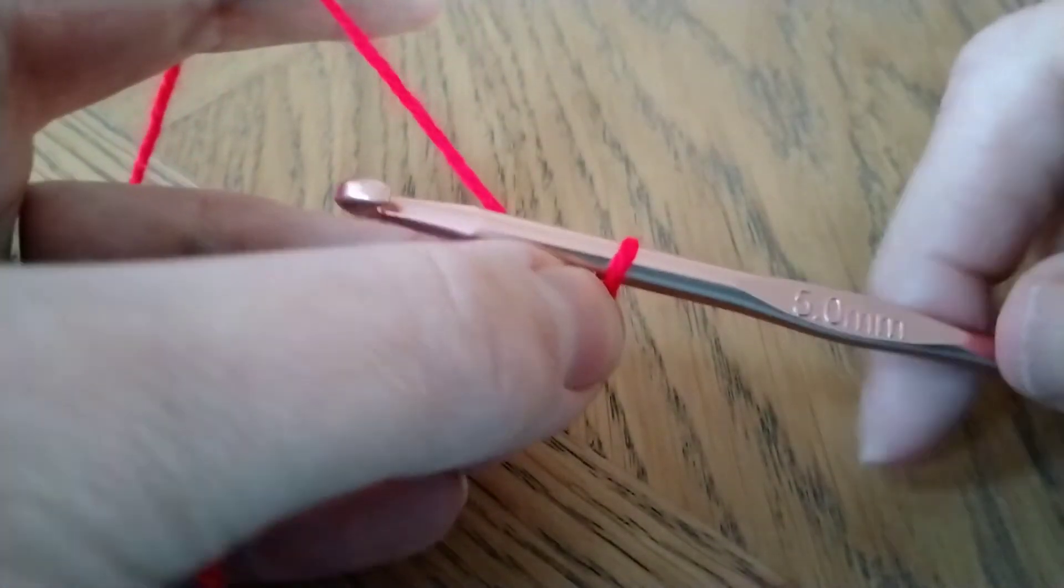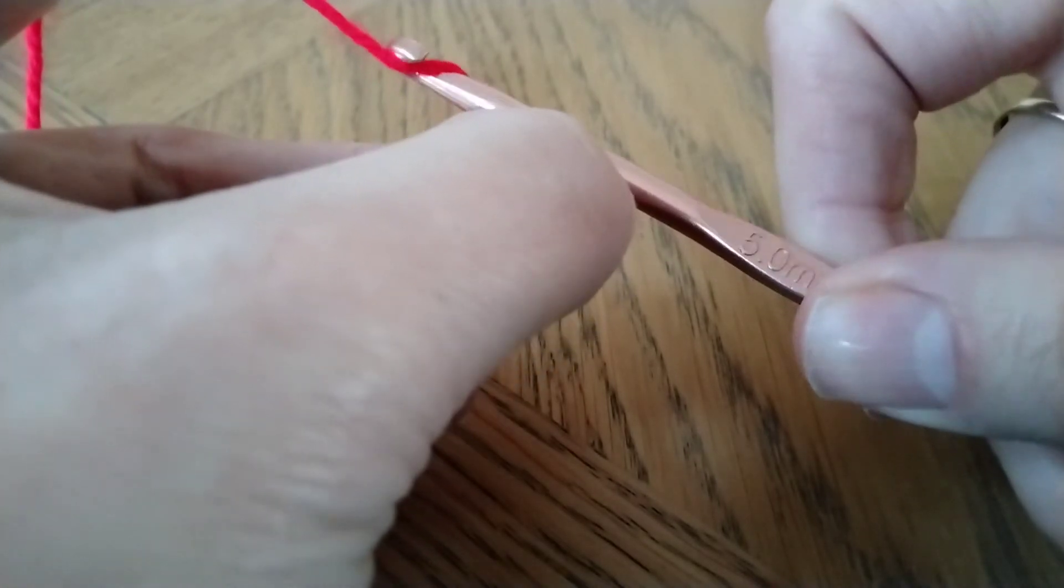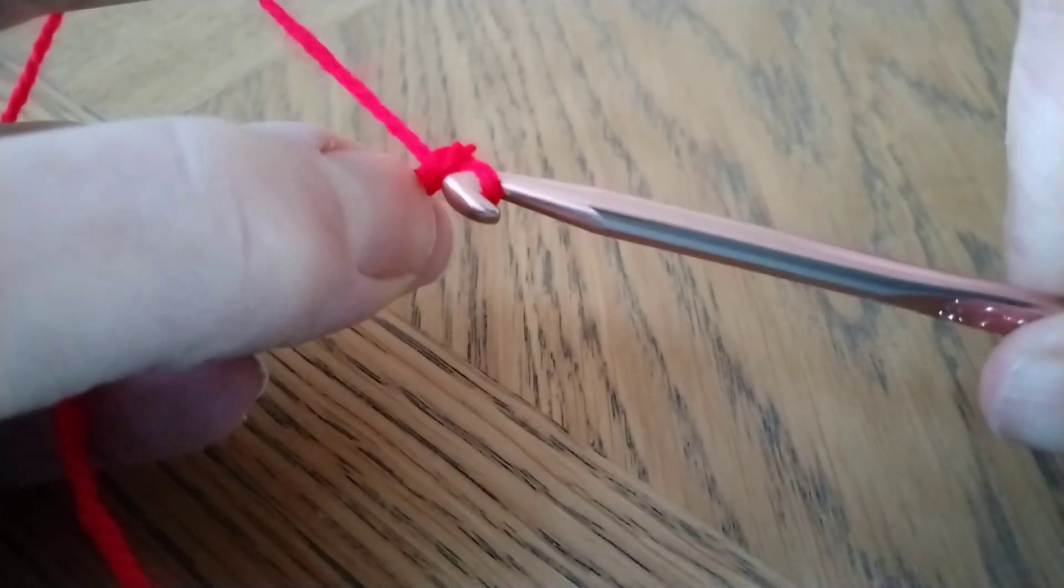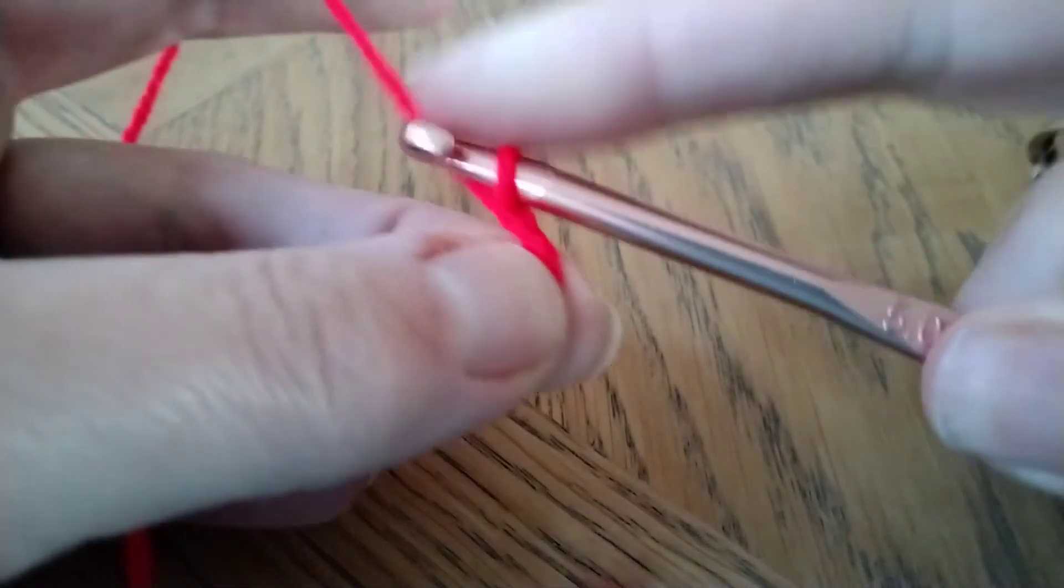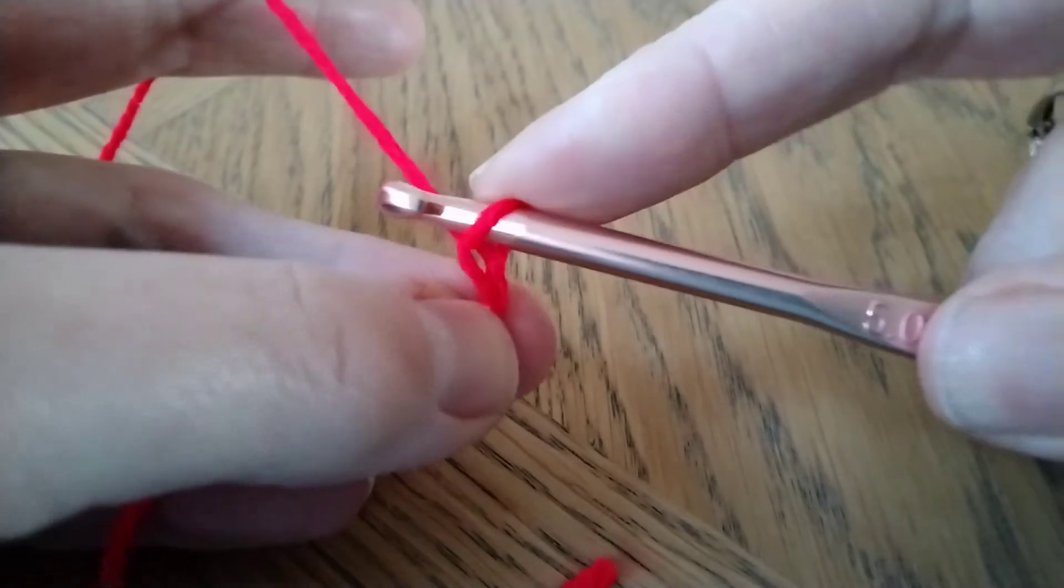So hook goes under and rotate it round and pull through the loop. So here you can see we have our first chain loop, and we're going to go again.